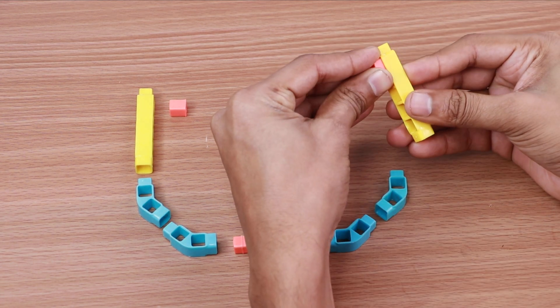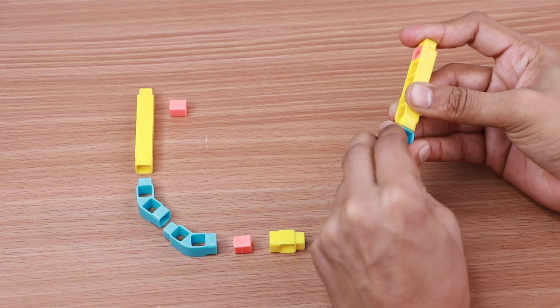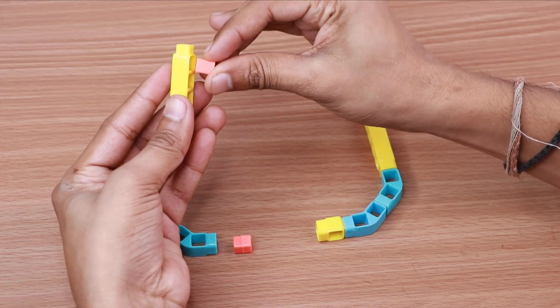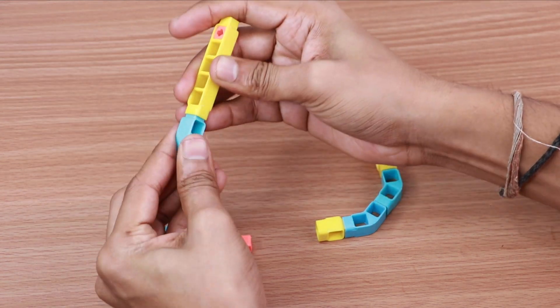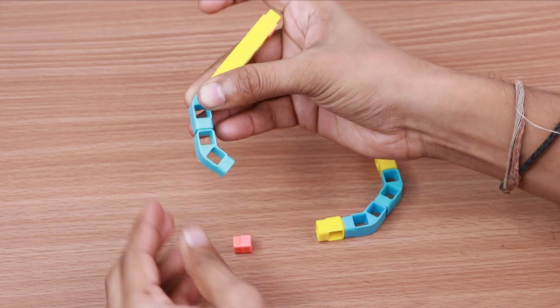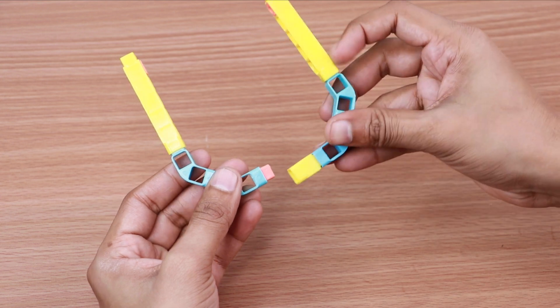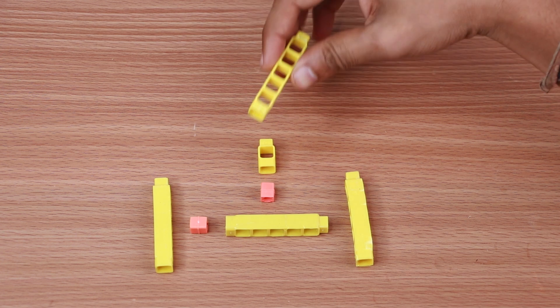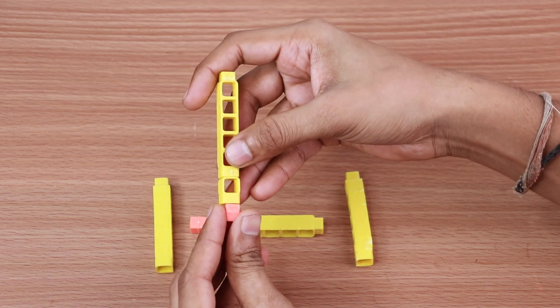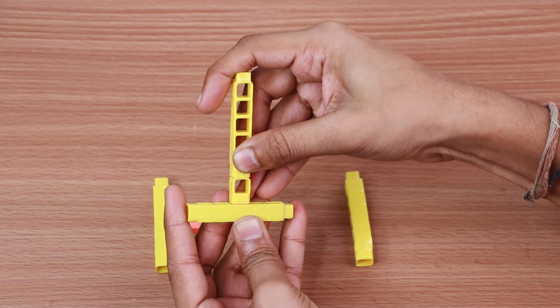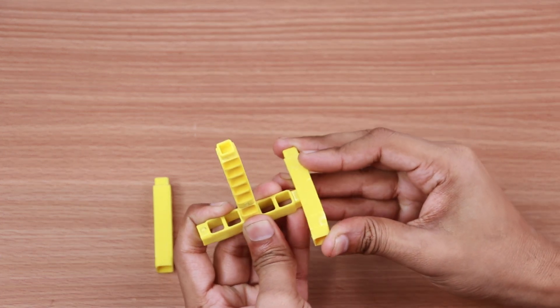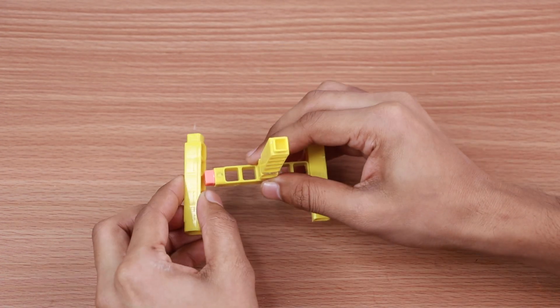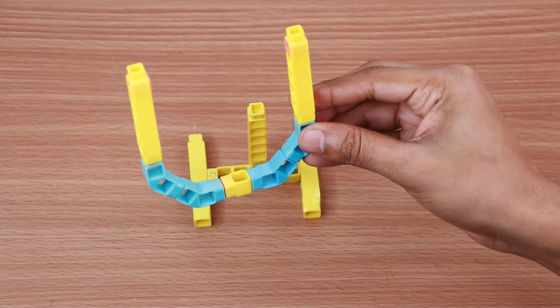Take 4 2-hole elbows, 2 BO shafts, 2 5-hole beams, 1 MM coupler, 1 1-hole beam and join them together. Next take 4 5-hole beams, 2 MM couplers, 1 1-hole beam and join them together. Now join both these parts together.